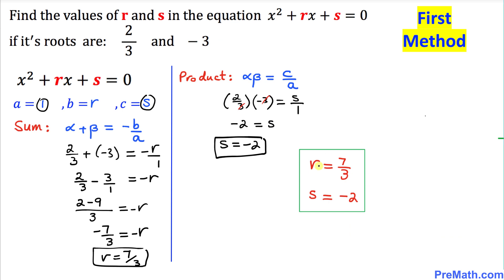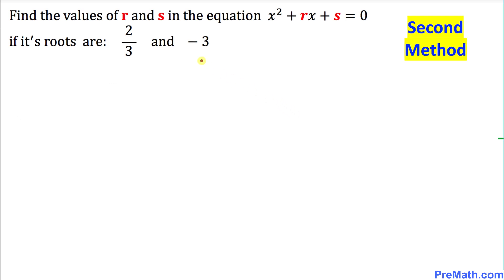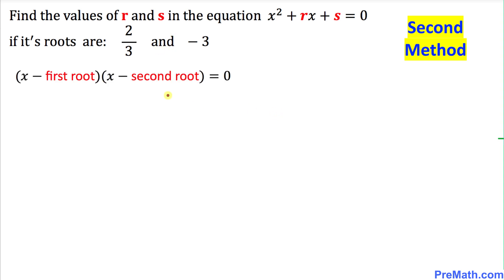So our r value turns out to be 7/3 and s is negative 2. Now I'm going to show you the second method to solve this given problem.